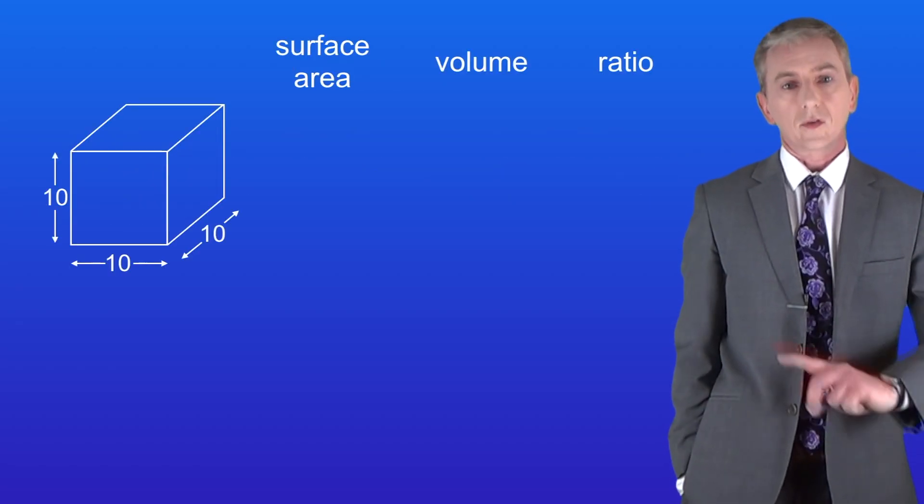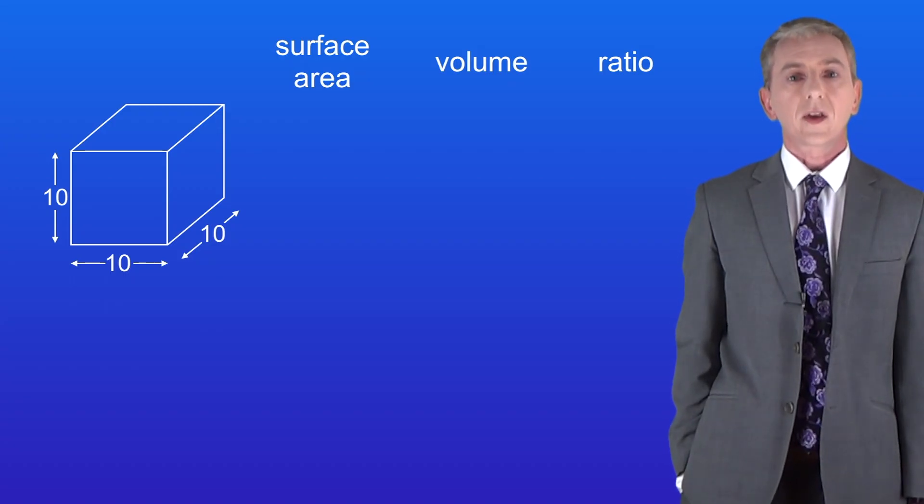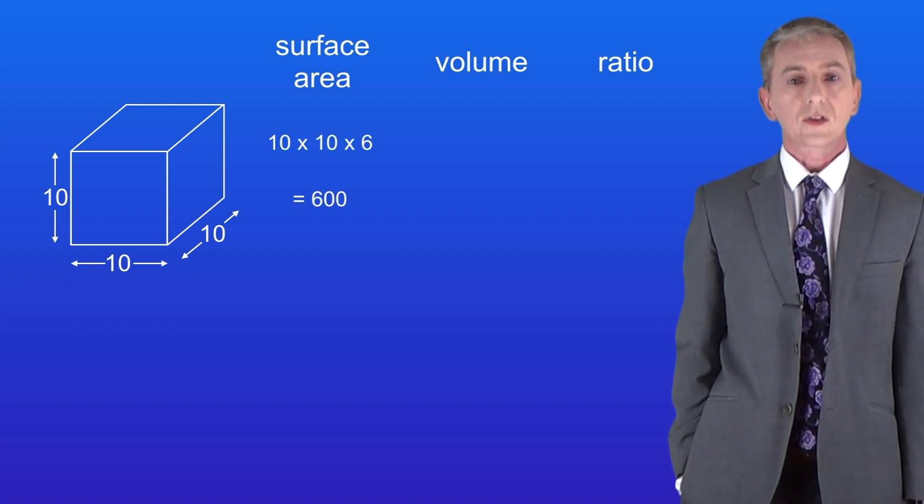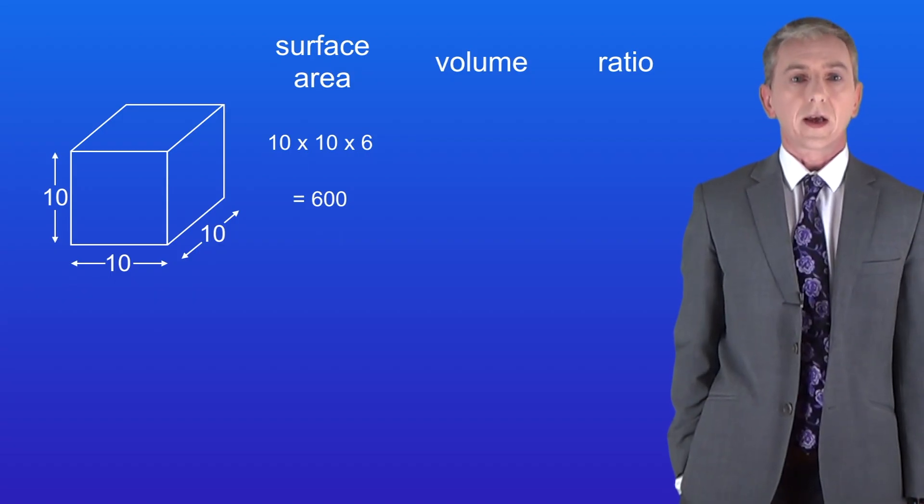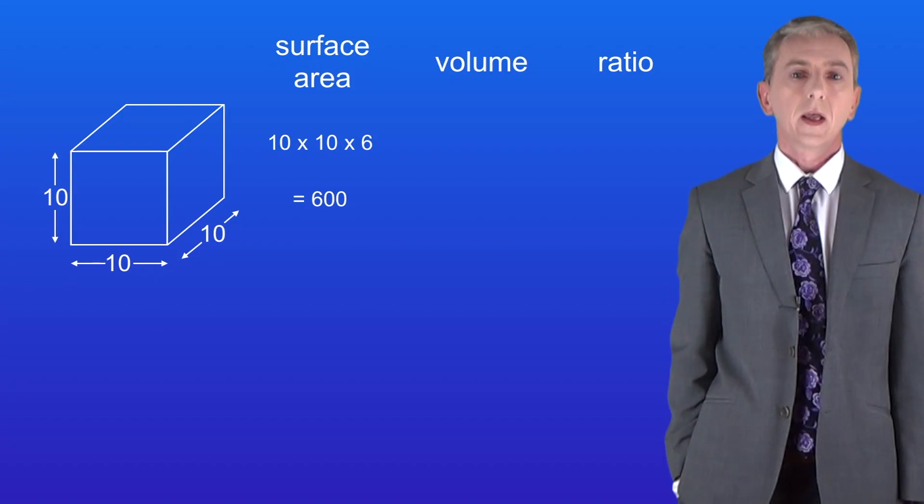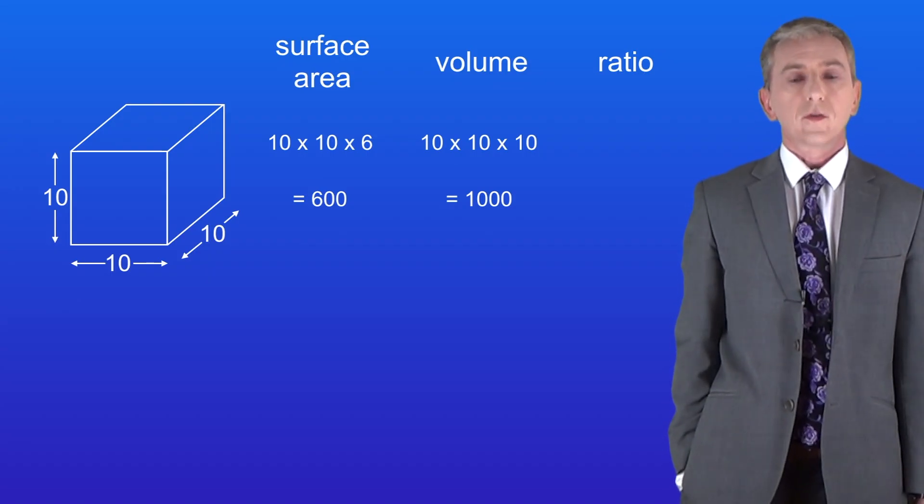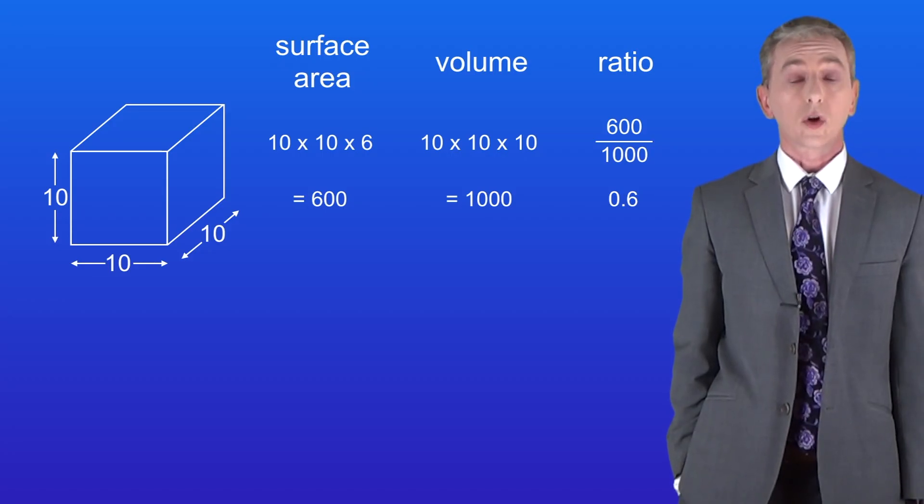I'm showing you this here. Imagine a particle shaped like a cube. The length of one side is ten units. The surface area of one side is ten multiplied by ten, which is one hundred units. We've got six sides so the total surface area is six hundred units. The volume of the cube is ten multiplied by ten multiplied by ten, giving us a volume of one thousand units. The surface area to volume ratio is six hundred divided by one thousand, giving us a value of 0.6.